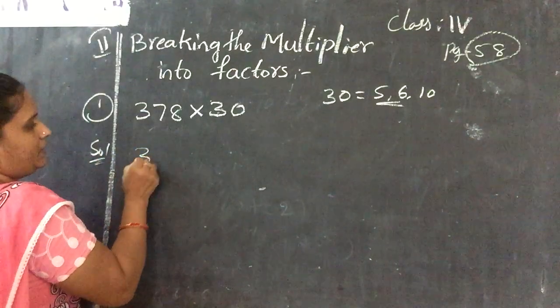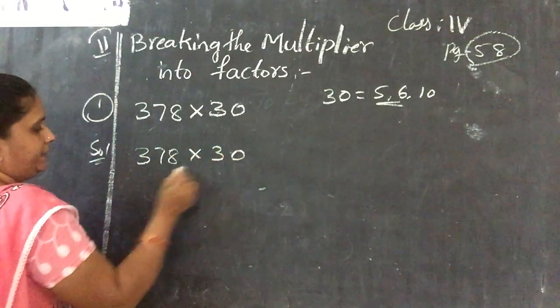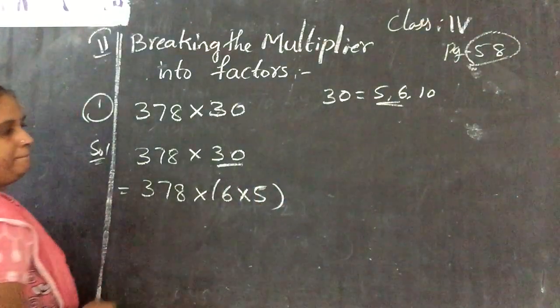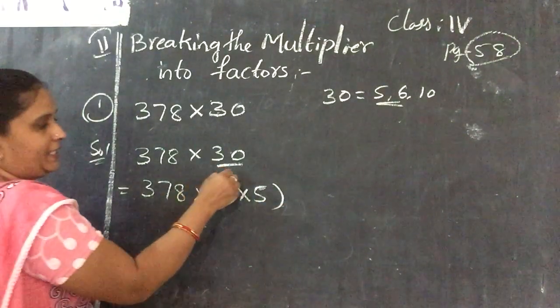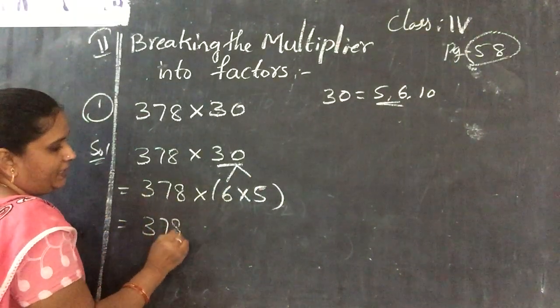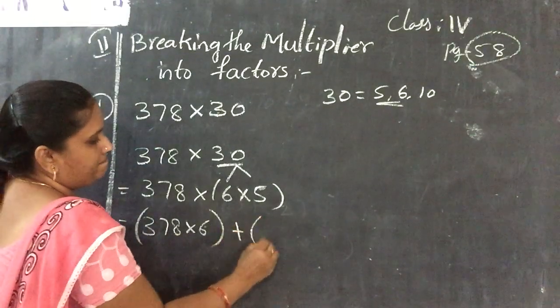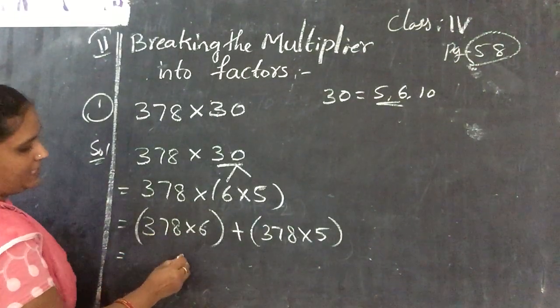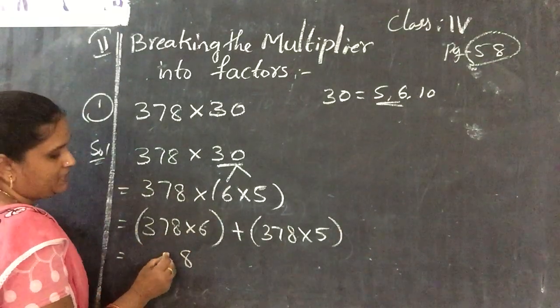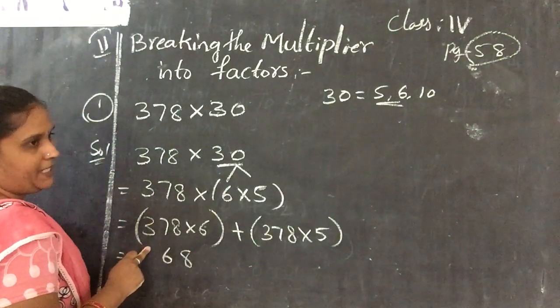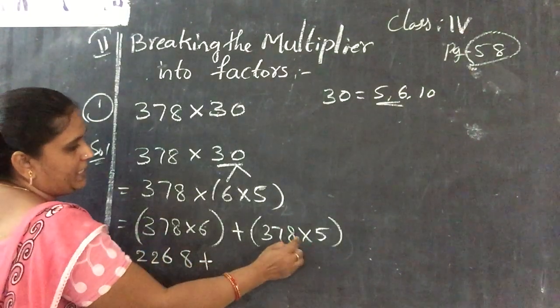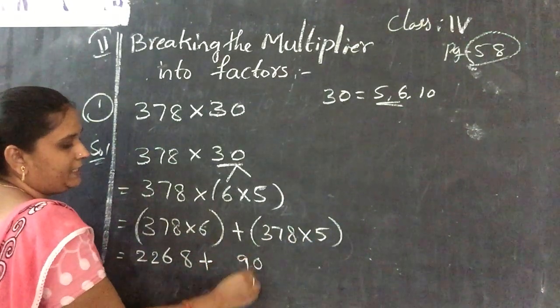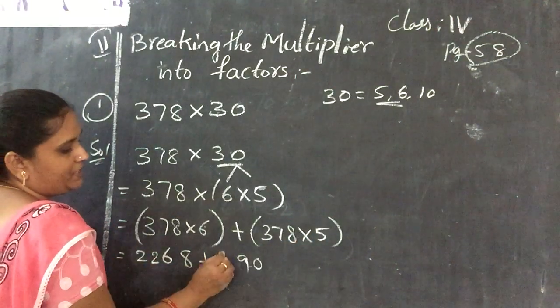How to do the sum 378 into 30? 378 into 30 can be divided, 6 fives are 30. We made 30 into factor. Now 378 into 6 plus 378 into 5. Do the multiplication. 6 eights are 48, 4 is the remainder. 6 sevens are 42 plus 4 is 46, 4 is the remainder. 6 threes are 18 plus 4 is equal to 22. Plus 5 eights are 40, 4 is remainder. 5 sevens are 35 plus 4 is equal to 39, 3 is the remainder. 3 fives are 15, 15 plus 3 is equal to 18.